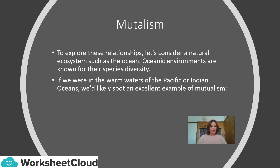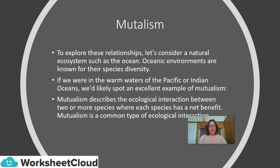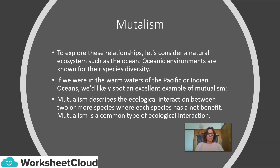Let's get started with mutualism. To explore the different relationships that we are looking at today, let's consider a natural ecosystem such as the ocean. Oceanic environments are known for their species diversity, so it is a good example to use. If we were in the warm waters of the Pacific or Indian oceans, we would likely spot an excellent example of mutualism. Mutualism describes the ecological interaction between two or more species where each species has a net benefit — they are both going to benefit. Mutualism is a common type of ecological interaction.